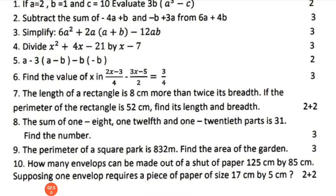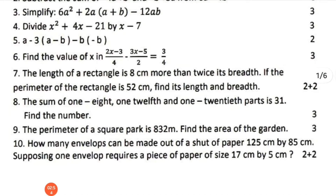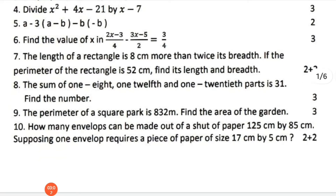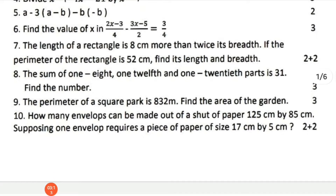The next question: divide x squared plus 4x squared plus 4x minus 21 by x minus 7. The next question: simplify a minus 3 into a minus b, minus b minus b. Find the value of x in: 2x minus 3 by 4, minus 3x minus 5 by 2, equals 3 by 4. The next question: the length of a rectangle is 8 centimeters more than twice its breadth. Given the perimeter, find the length and breadth.